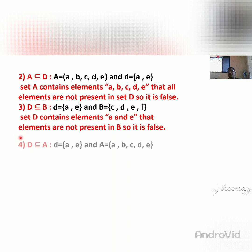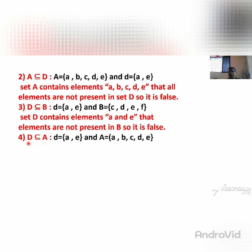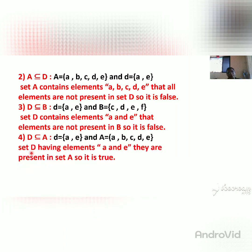Problem D: D is a subset of A. D has elements A and E. We check: D has A, and A has A — good. D has E, and A has E — good. All elements of D are present in A. So we can say that D is a subset of A. This statement is true.